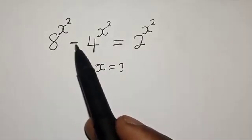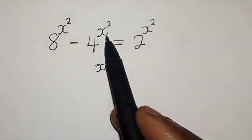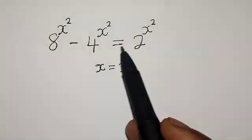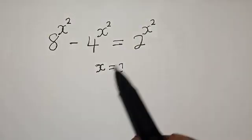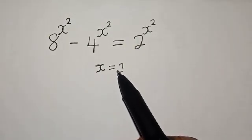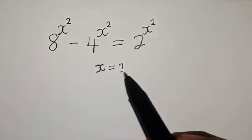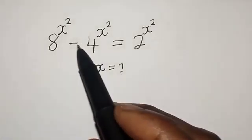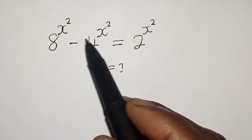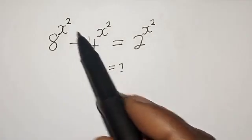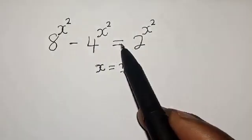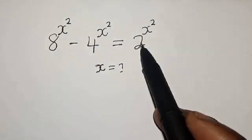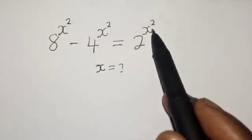8 raised to power s squared minus 4 raised to power s squared is equal to 2 raised to power s squared. What is the value of s? Hi everyone, welcome to my class. In this class, we want to find the value of s from this given equation.